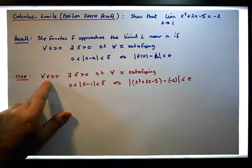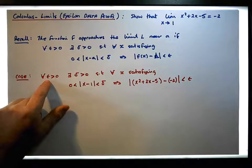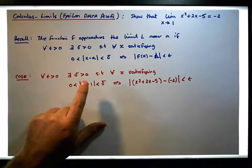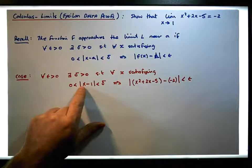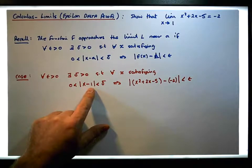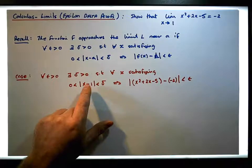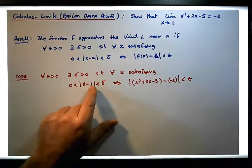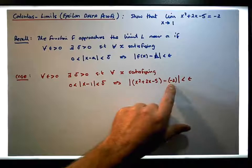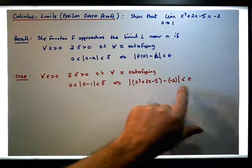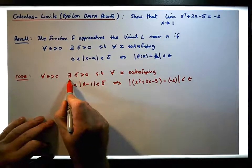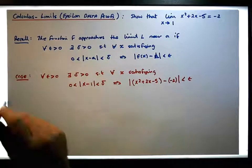So if someone gives us an epsilon greater than 0, for the limit to exist we need to find a delta greater than 0 such that for all x satisfying the condition that |x minus 1| is less than delta, that needs to imply the function minus its limit is less than epsilon. The most important thing is to find this particular delta.